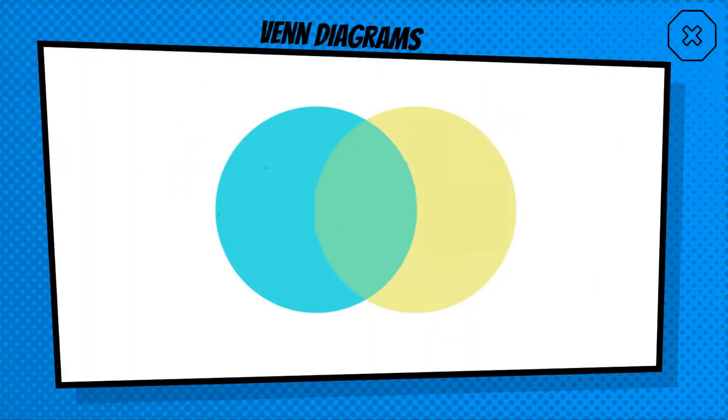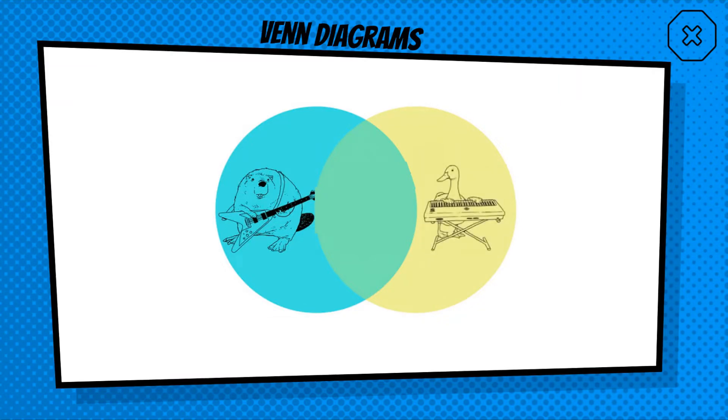So first of all we have Venn diagrams. So Venn diagrams are usually circular overlapping diagrams that help us sort of compare or relate two categories. All right, for an example, if I had one category being small fluffy animals who play the guitar, and my other category was animals with beaks who play the keyboard, well then the overlap of these two categories would be a platypus that plays the keytar. Okay, he's both fluffy and has a beak, and he's playing both a guitar and a keyboard. So yeah, you've got category A, category B, and the overlap.